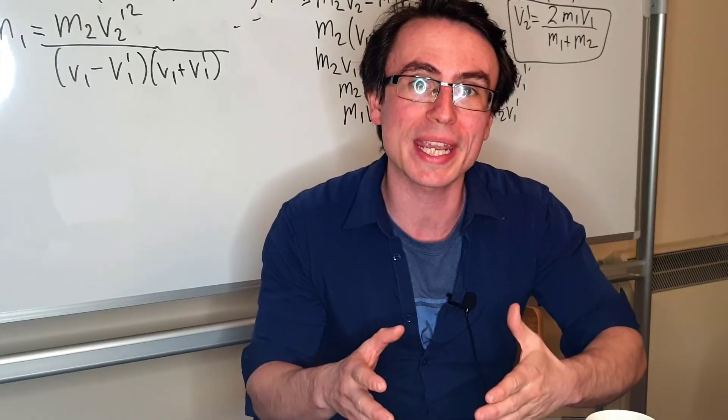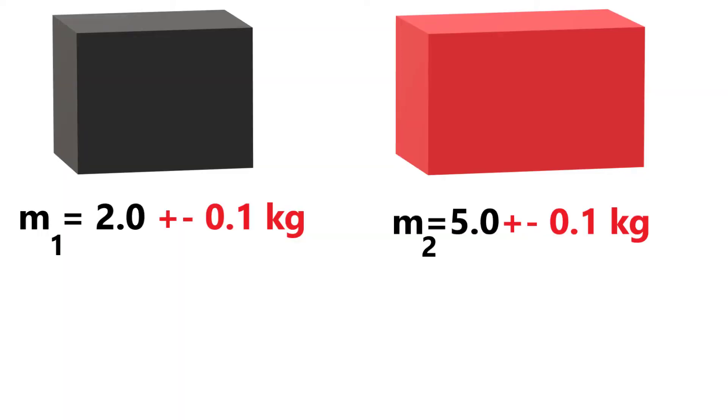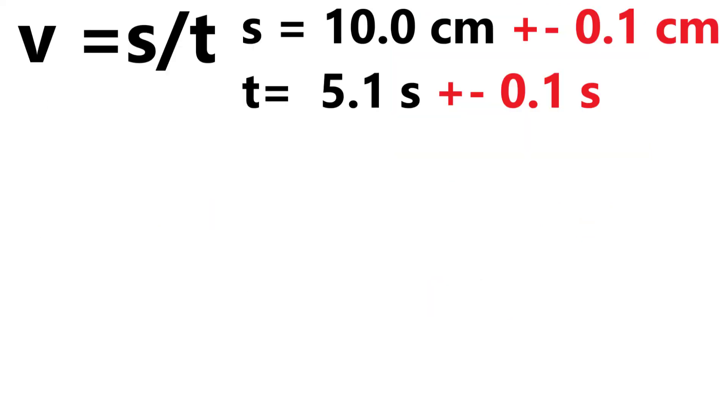If we add or take away quantities, for instance if we're adding two masses, we need to add the absolute uncertainty. On the other hand,